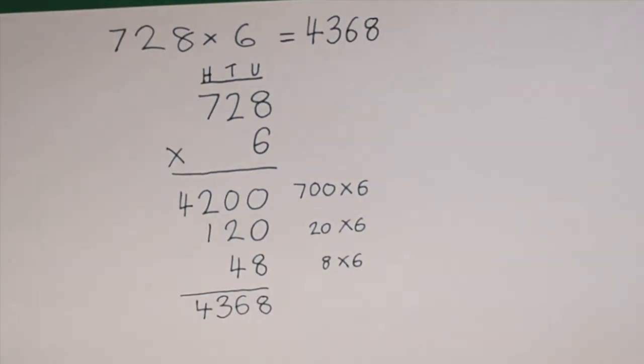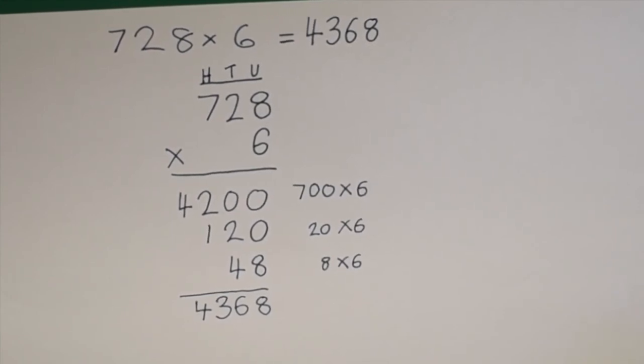So this means that 728 times 6 equals 4368.